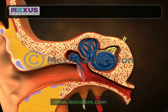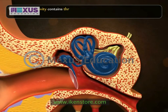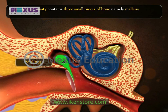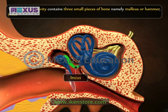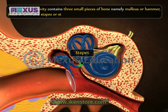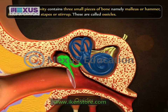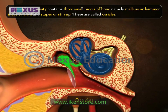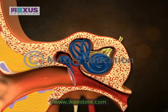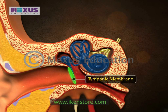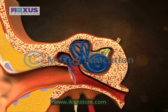The middle ear cavity contains three small pieces of bone, namely malleus or hammer, incus or anvil, and stapes or stirrup. These are called ossicles. Auditory ossicles transmit the sound-induced vibrations of the tympanic membrane to the fluid endolymph, which fills the internal ear.